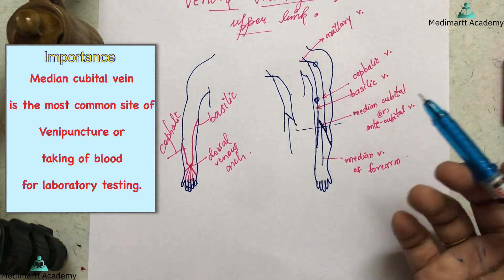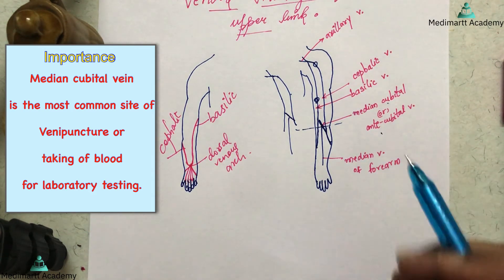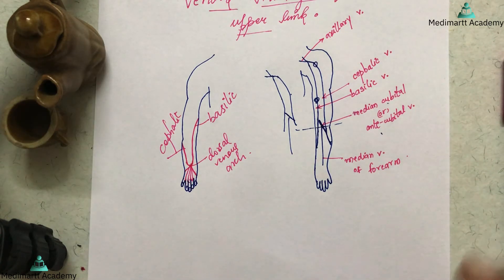Now one thing that I want to tell you is the importance of the vein. The median cubital or anti-cubital vein is the most common venous site for collection of venous blood, which you are obviously familiar with.